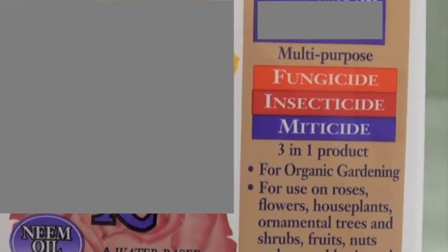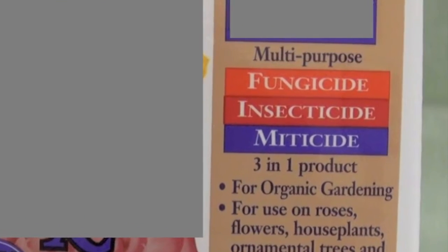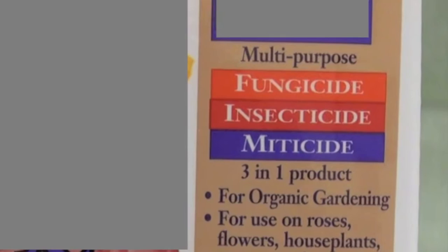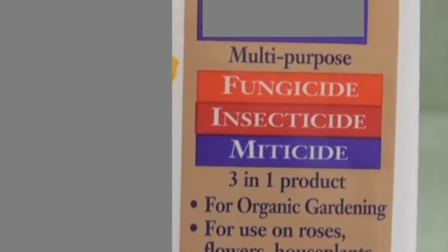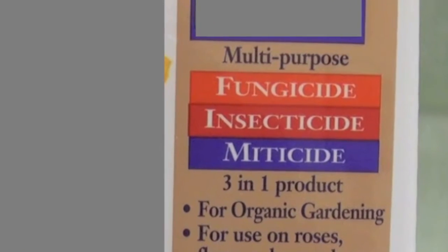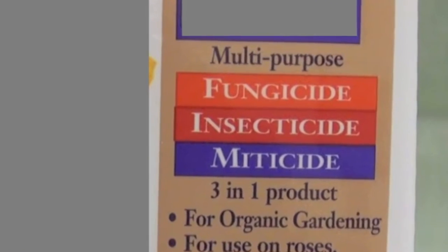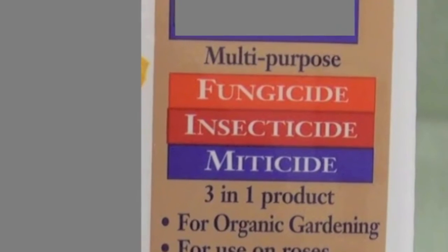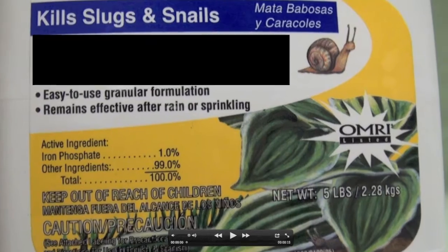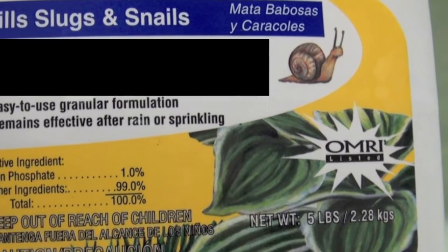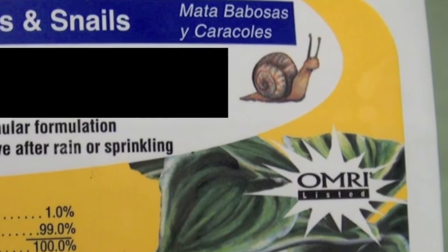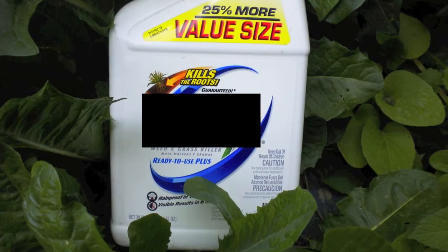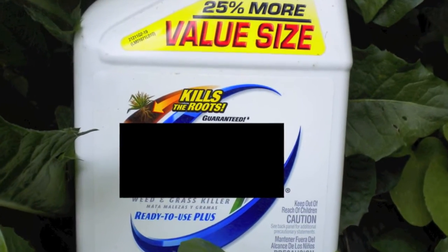Pesticides are designed to kill different types of pests found in the home or garden. The most common are fungicides to kill fungi and sometimes mold, insecticides to kill insects, miticides to kill mites, molluscicides to kill snails and slugs, and herbicides to kill weeds.